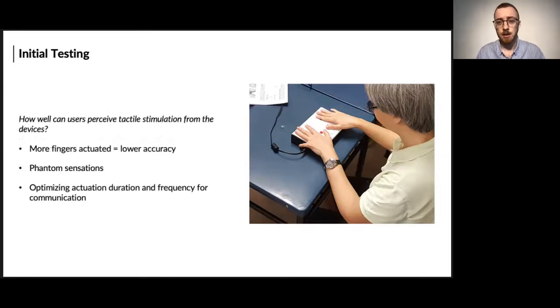Addressing the first question, we actually conducted a stimuli perception evaluation, which was with a range of different tactile patterns from the devices. And what we found here was that in general, people and users were able to distinguish between the different stimuli. But as the number of fingers being actuated did increase, we actually found that users did find it much more challenging to accurately detect these patterns. Additionally, some actuation patterns did tend to trigger what were known as phantom sensations, which is where the users perceived vibrotactile stimulation in a finger which wasn't actually being actuated.